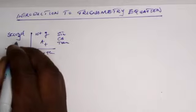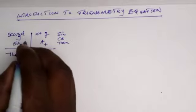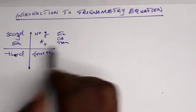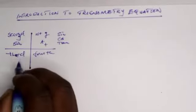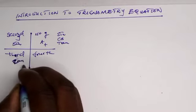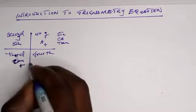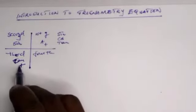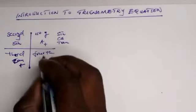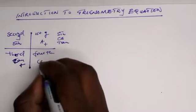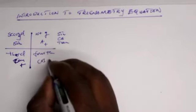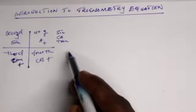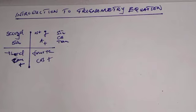In the second quadrant, only sine is positive. Cosine and tangent are negative. In the third quadrant, sine and cosine are both negative. In the fourth quadrant, only cosine is positive, so sine and tangent are negative in the fourth quadrant.